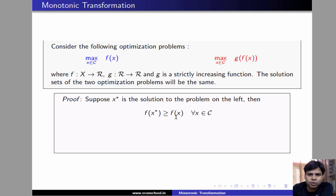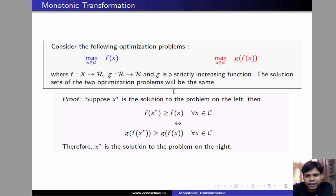And since f(x*) ≥ f(x) for all x in C, it must be the case that g(f(x*)) ≥ g(f(x)) for every x in C. This tells us that x* is also the solution to the problem on the right. So, we have shown that if x* solves the problem on the left, then x* also solves the problem on the right.